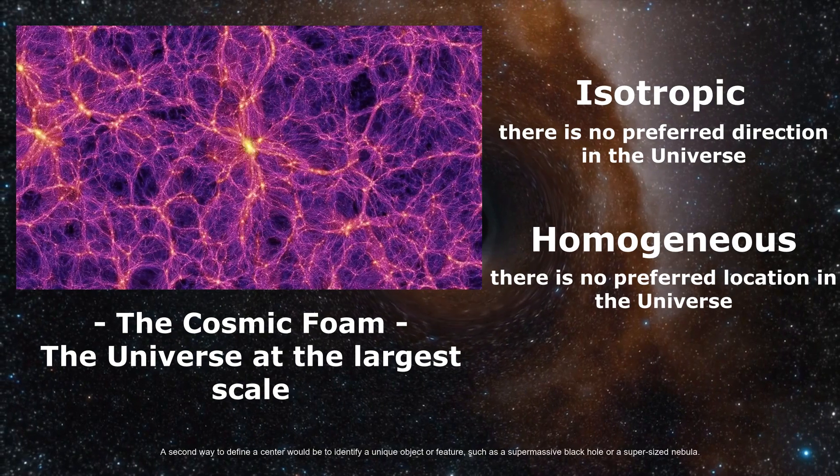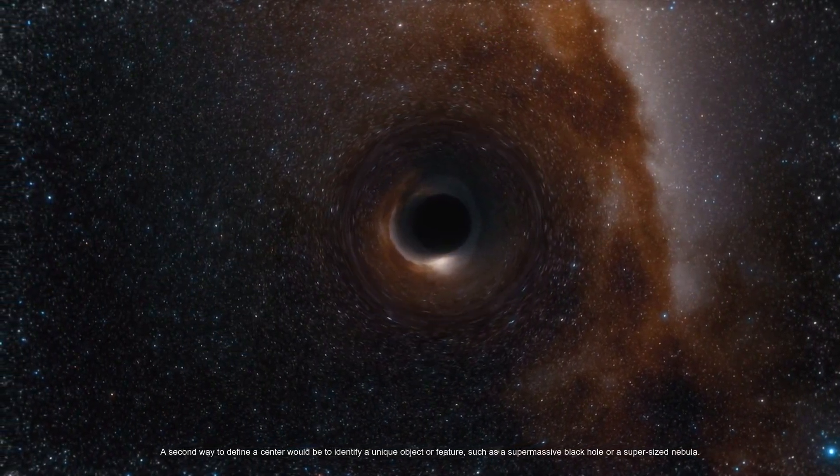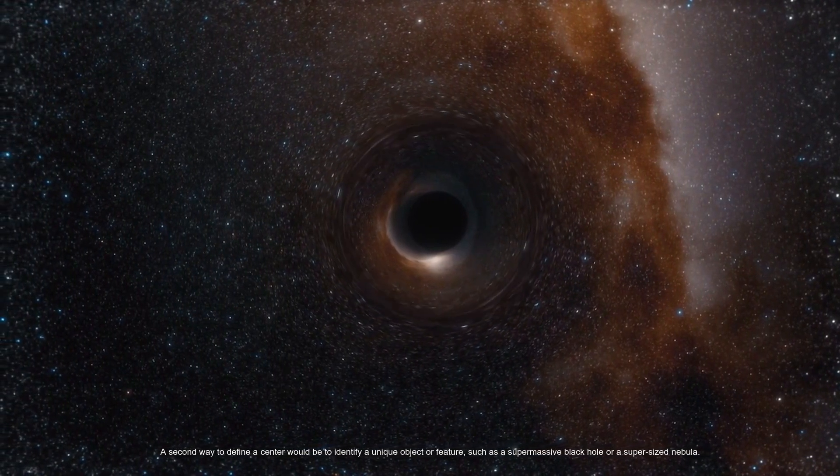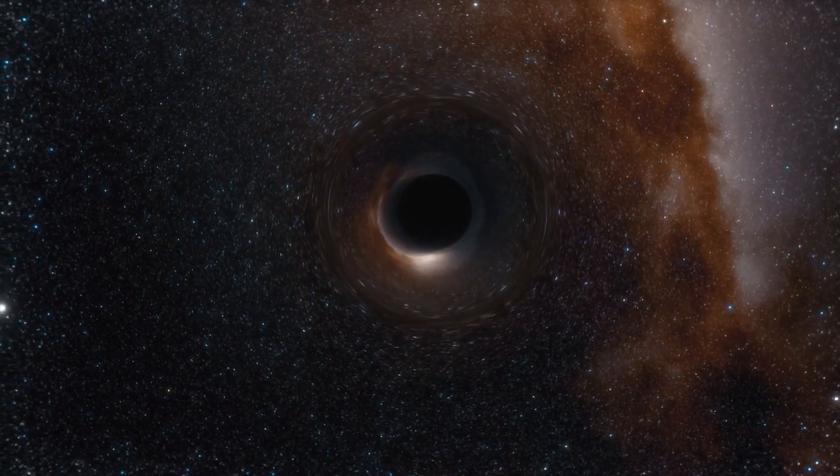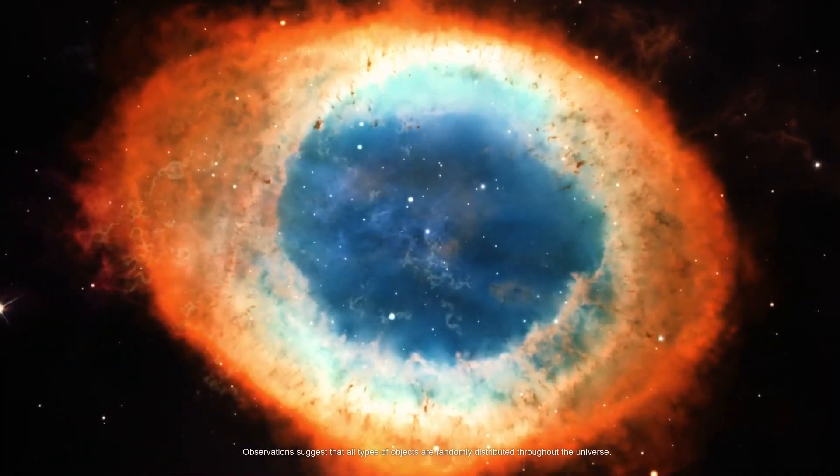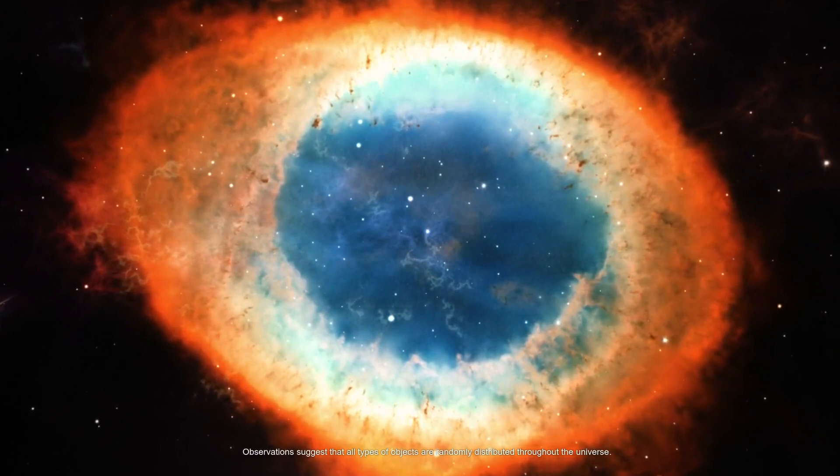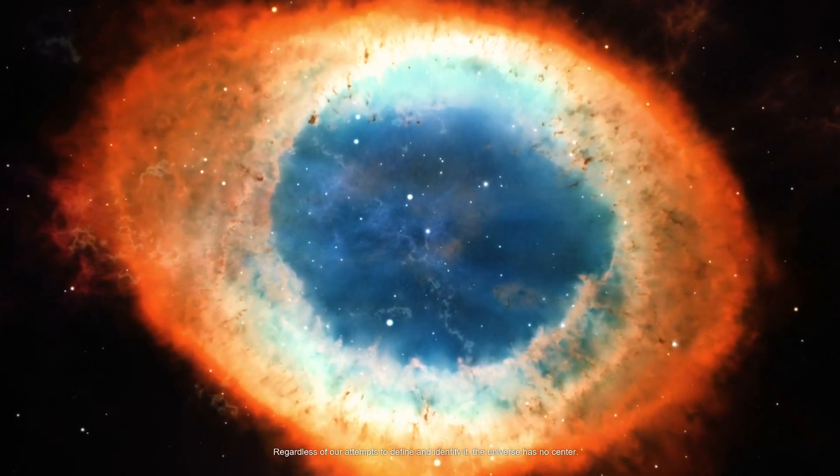A second way to define a center would be to identify a unique object or feature, such as a supermassive black hole or a supersized nebula. Observations suggest that all types of objects are randomly distributed throughout the universe. Regardless of our attempts to define and identify it, the universe has no center.